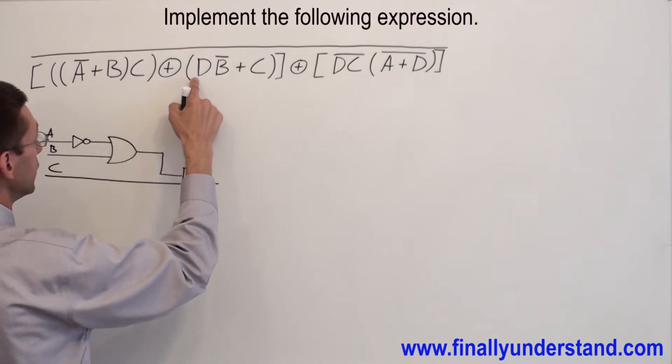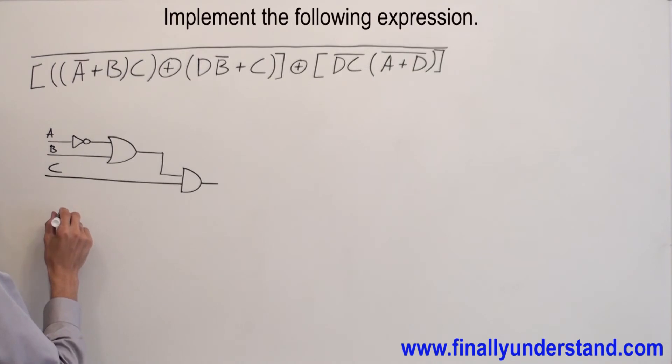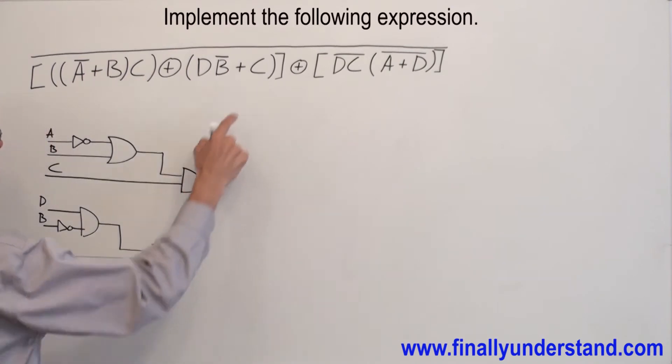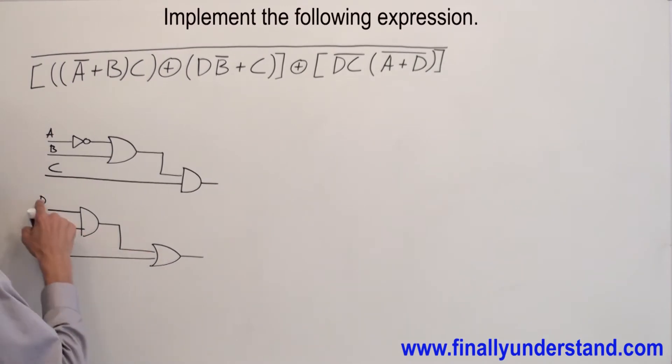Now let me go over this one. I have D, I have D ANDed with B node, this is D, this is B node, and I have C ORed with my AND gate. C ORed with AND, C ORed with AND.